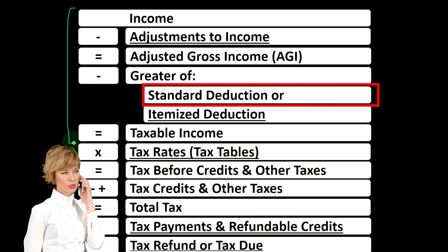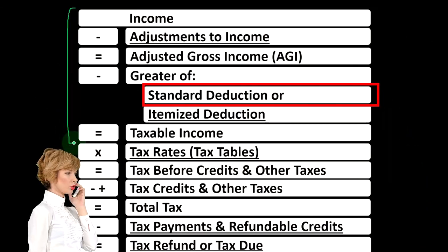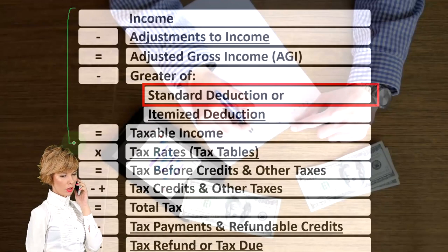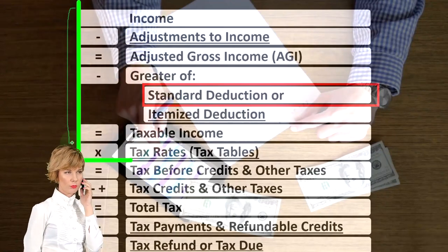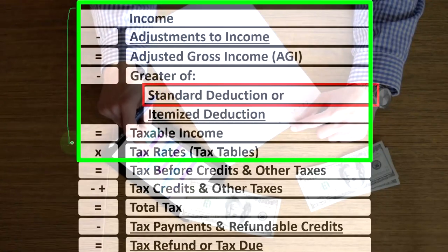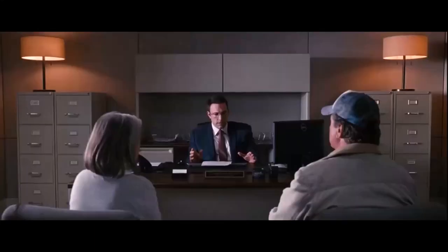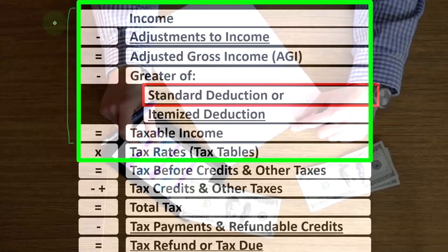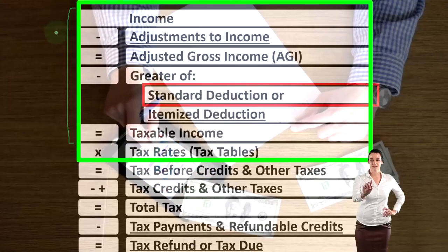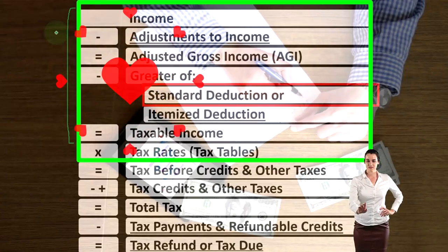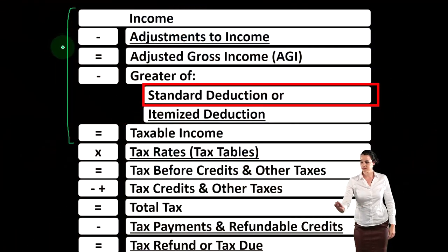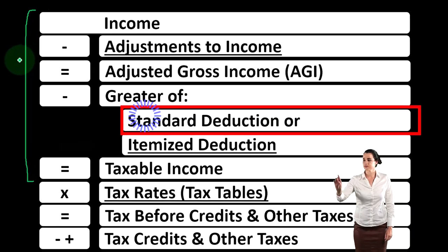The income statement is, in essence, income minus expenses, or income minus deductions. But we have a couple of steps along the way before we get to the net income or taxable income. We've got income minus the adjustments to income — the above-the-line deductions we saw in a prior presentation — which gets us to the adjusted gross income, or AGI.